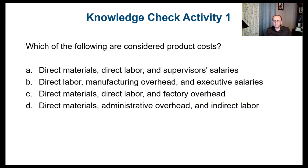Let's try a knowledge check. Which of the following are considered product costs? Is it direct material, direct labor, and supervisor salaries? No. Direct labor, manufacturing overhead, and executive salaries? Again, no. Direct material, direct labor, and factory overhead? That sounds reasonable. Or direct material, administrative overhead, and indirect labor? The right answer is C — direct material, direct labor, and factory overhead.